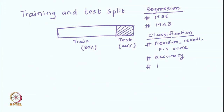Apart from that, we use ROC curves and PR curves to understand how our classification is working across different thresholds. We will go through each of these terms in detail later in this module. For now it is enough to understand that we will be using one of these measures and reporting performance on the test data.